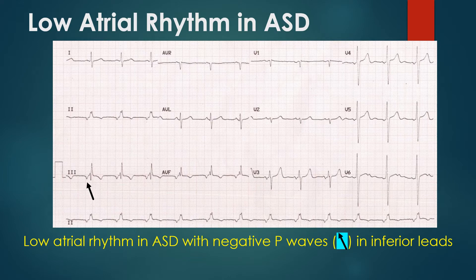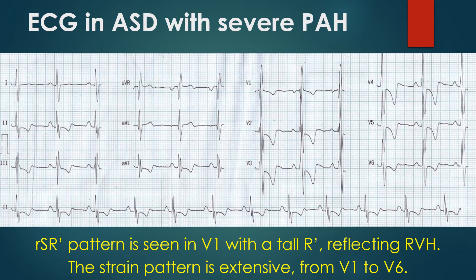In addition, there is notching of the QRS complex in lead 2, suggesting crochet touch sign. RSR' pattern is seen in V1 with a tall R' reflecting right ventricular hypertrophy. The right ventricular strain pattern — ST depression and T wave inversion — is extensive from V1 to V6, indicating that the hypertrophied and enlarged right ventricle is occupying the whole anterior surface of the heart.